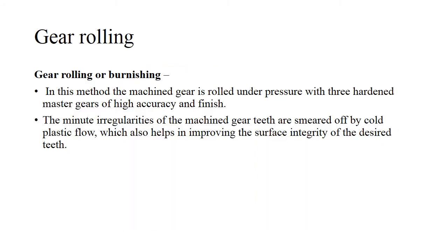Lastly, we'll speak about the gear rolling or burnishing process. In this, the machined gear is rolled under pressure with three hardened master gears of high accuracy and finish. The work piece undergoes rolling under pressure, and all the minute irregularities of the machined gear teeth will be smeared off by cold plastic flow, which also helps in improving the surface integrity of the desired teeth. All the extra dimensions will be removed by using cold plastic flow, which again ensures a very good surface finish.